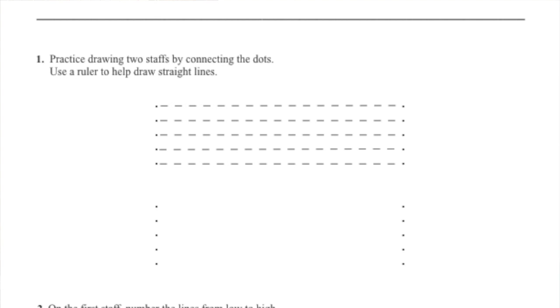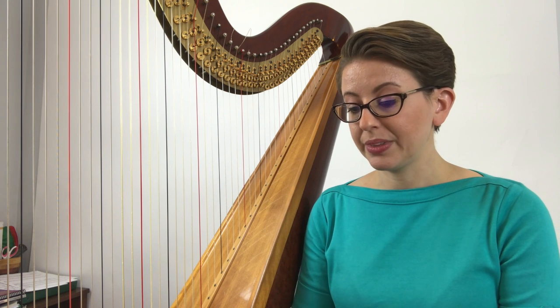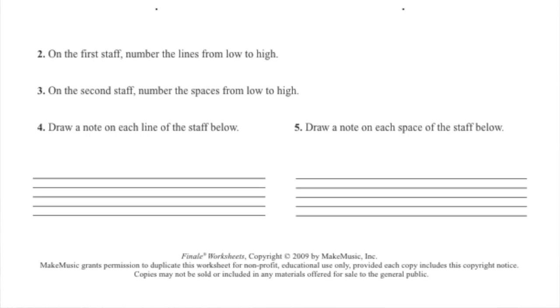On the second staff, number the spaces from low to high. In number four, draw a note on each line of the staff, and for number five, draw a note on each space of the staff.